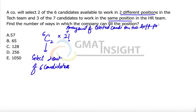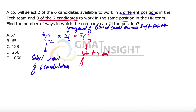For the second part of the question, we have to select three out of seven candidates to work in the same position, so that is simply C(7,3). Because the positions are identical, the arrangement of those three people on these three places will be 1, since anyone going to any place is exactly the same outcome.